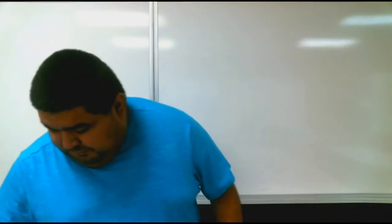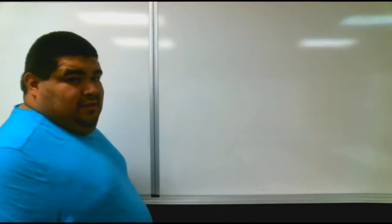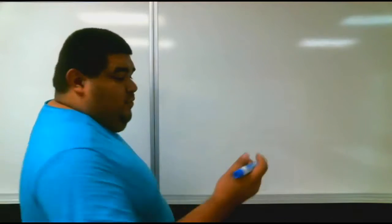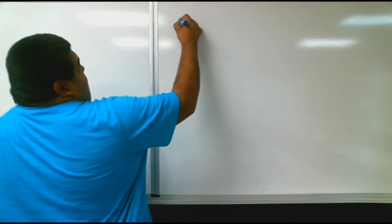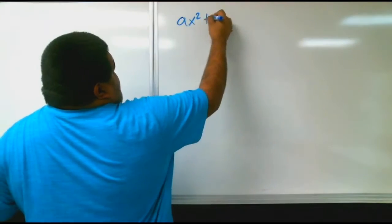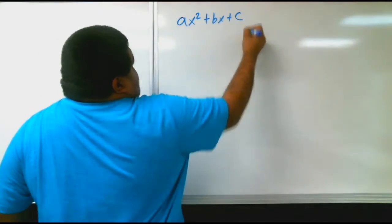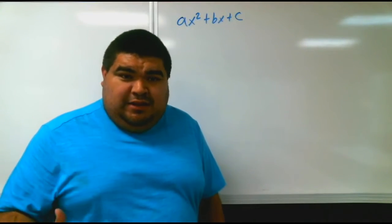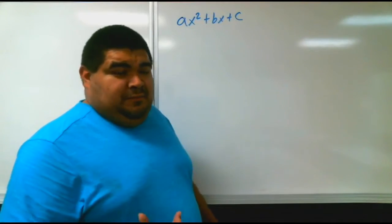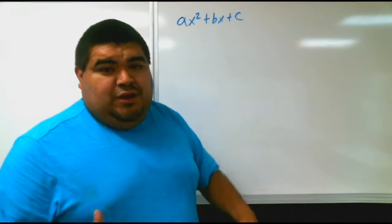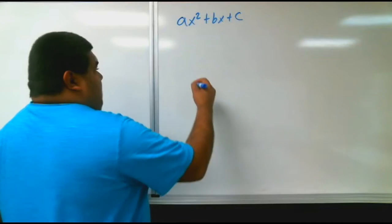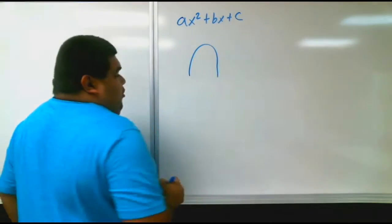You might ask yourself, what are parabolas? Parabolas are what you graph from any equation that is a quadratic. A quadratic formula is ax squared plus bx plus c. That is a quadratic. For parabolas, it always revolves around a quadratic. A parabola is a shape or line that curves.